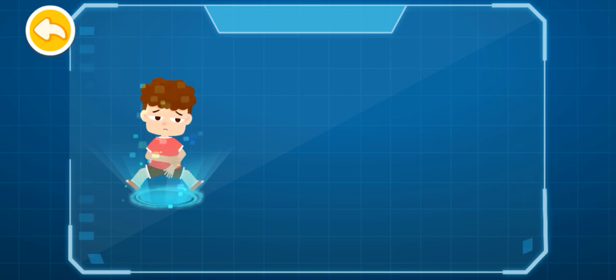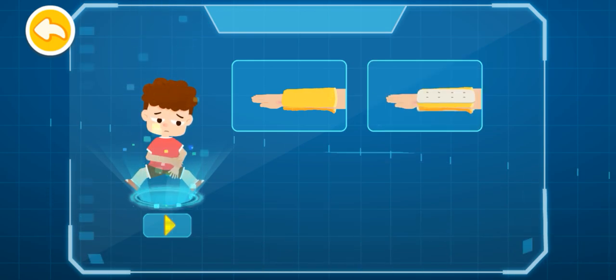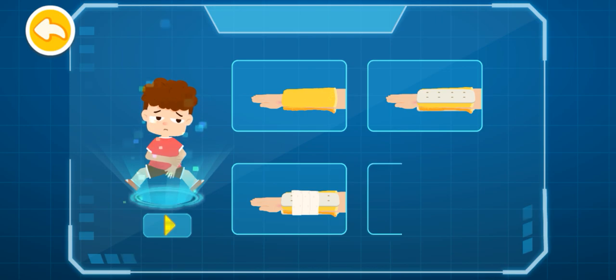First aid for closed fracture. 1. Fill with soft cloth. 2. Secure with a splint. 3. Wrap with a bandage. 4. Suspend with a triangle towel.